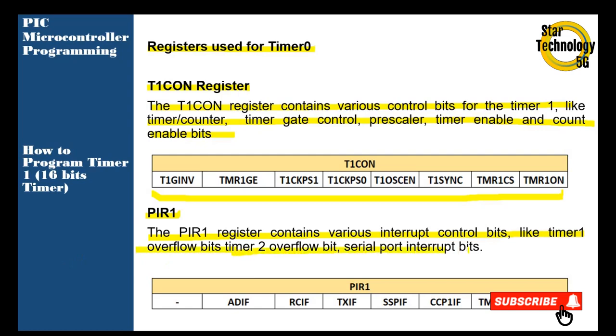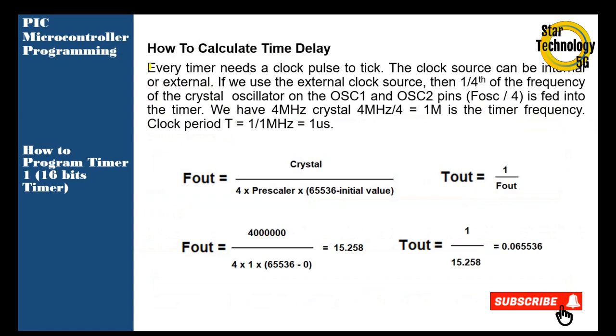How to calculate the time delay? Every timer needs a clock pulse to tick. The clock source can be internal or external. If we use the external oscillator, then 1/4 of the frequency of the crystal oscillator on OSC1 and OSC2 pins is fed to the timer. We have a 4MHz crystal; 4MHz divided by 4 equals 1MHz timer frequency. Clock period T equals 1 over 1MHz, which equals 1 microsecond.